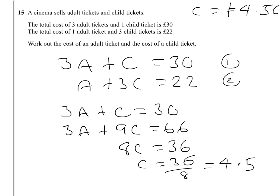So we know what C is, so we'll go back to the simplest equation, I think, which is the top one. So we know that 3A, I'll just squeeze the working in here, 3A plus £4.50 equals 30. So take the £4.50 away from 30, and we've got 3A equals £25.50.